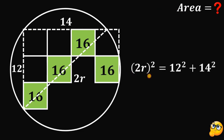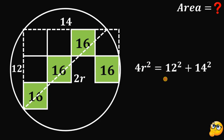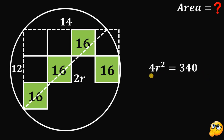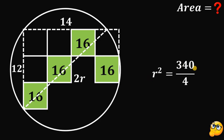So we have (2r) squared equals 12 squared plus 14 squared. Now, (2r) squared gives us 4r squared. 12 squared is 144, and 14 squared is 196. And 144 plus 196 equals 340.